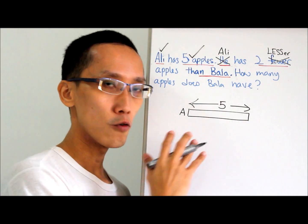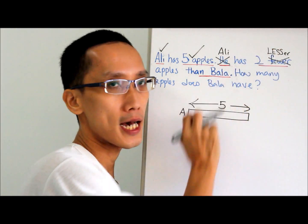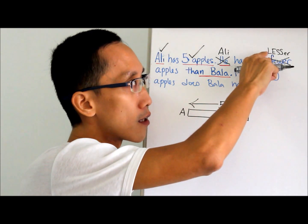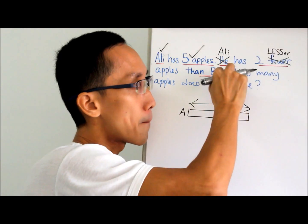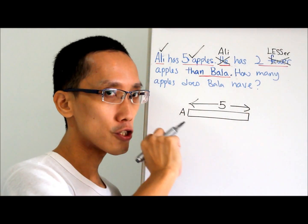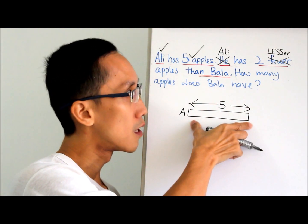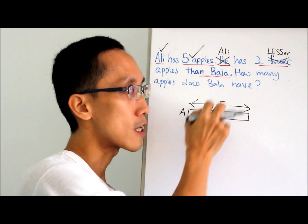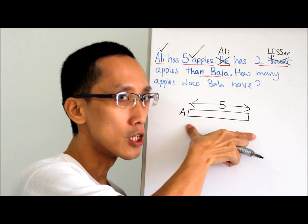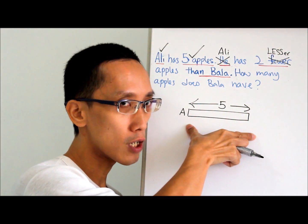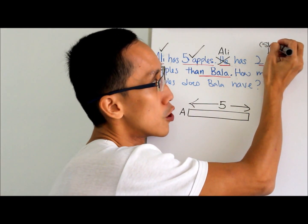Look carefully — Ali less Bala. Don't explain the 'two' yet. Explain Ali less Bala. So, Ali has a shorter or longer rectangular box? Ali less Bala — Ali should have a shorter rectangular box. Shorter or longer? Shorter. Great. Less means the box must be shorter.